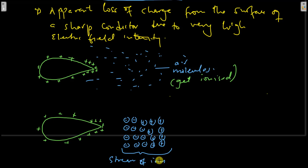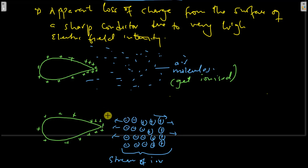Because these ions are charged — they have positive and negative charges on them — the negative ions will be attracted towards the sharp end, while the positive ions will be repelled away. This is from the fundamental laws of electrostatics: negative charges are attracted by positive charges, while positive and positive repel each other. So we have negative ions attracted and positive ions repelled.